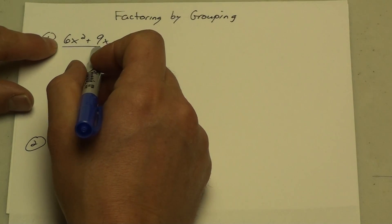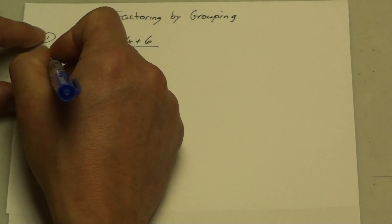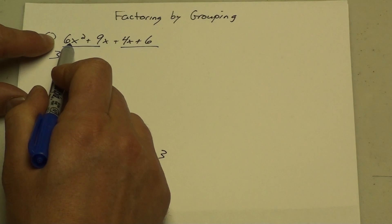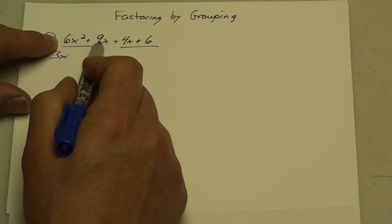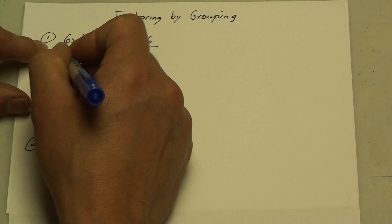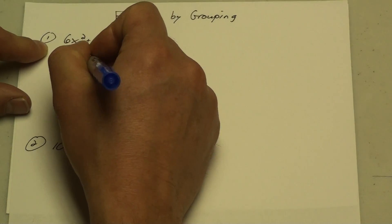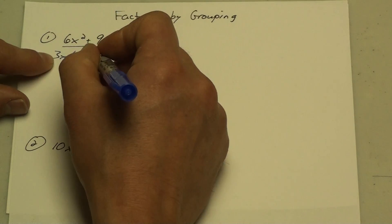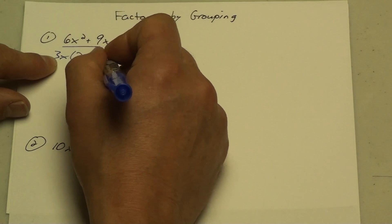For the first half here, I can take out a 3 and an x. Both these terms are divisible by 3 and they both have an x in it. And when I do that, divide, divide, I'm left with 2x, and then 9x divided by 3x is just a 3.